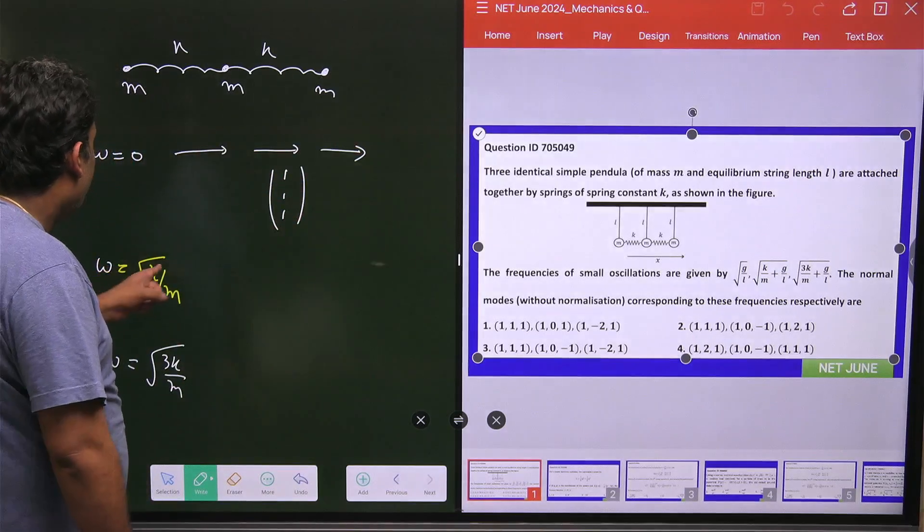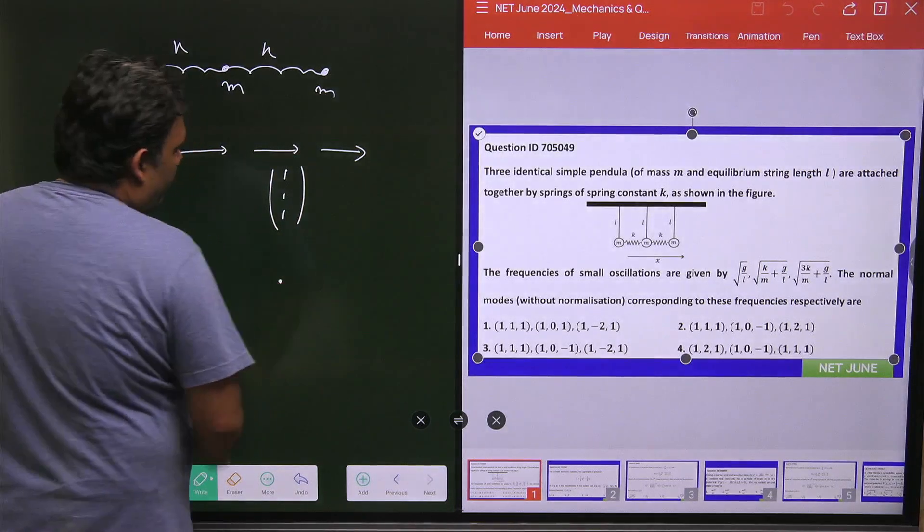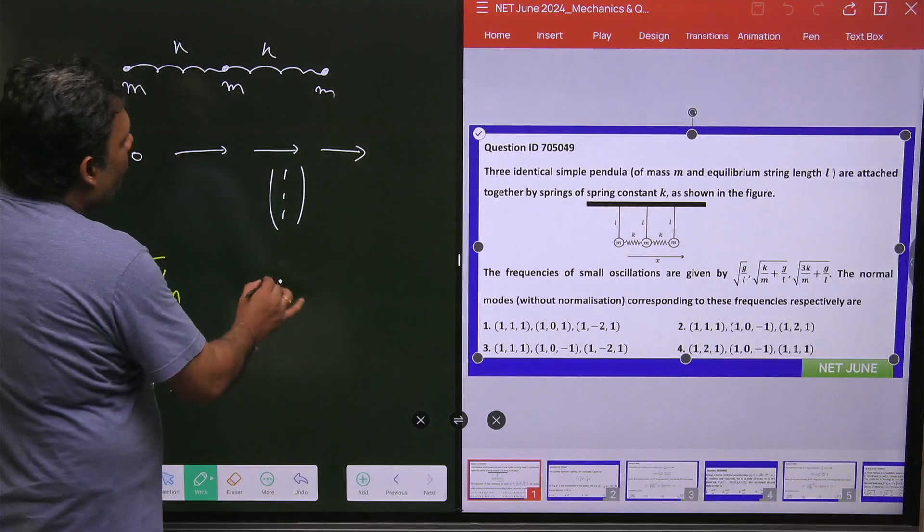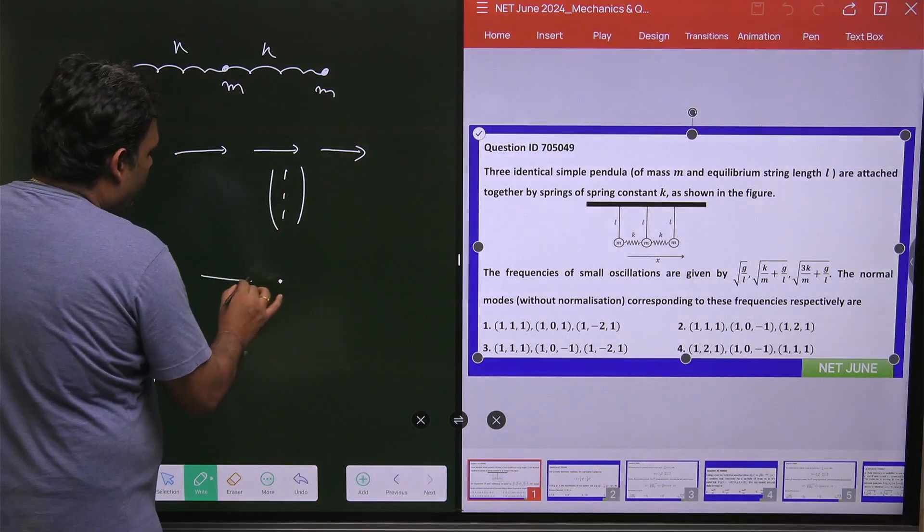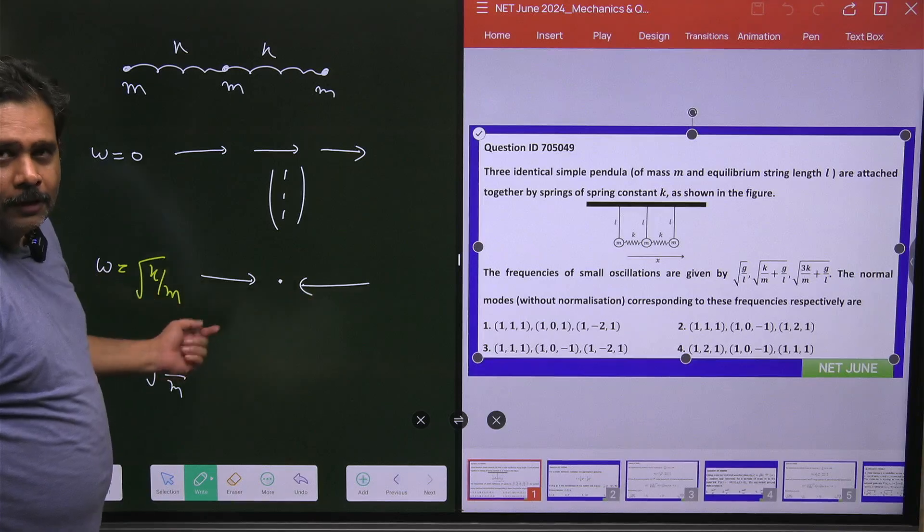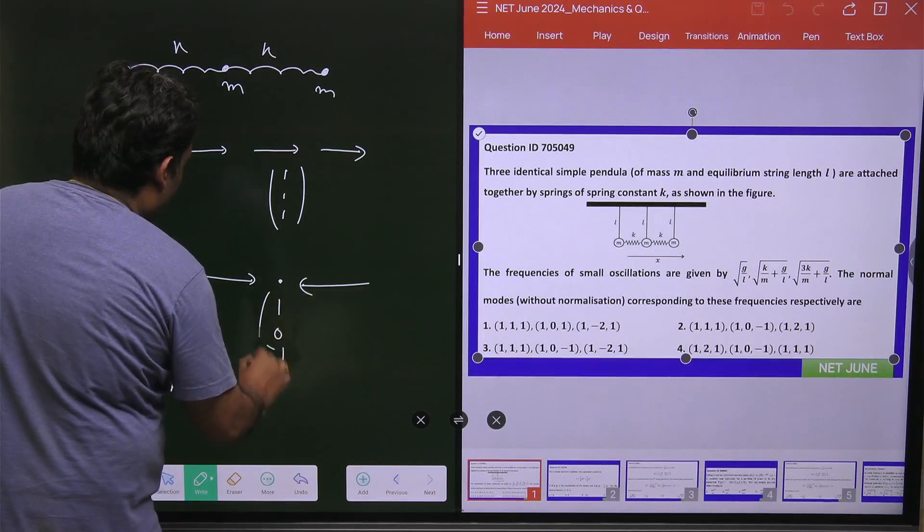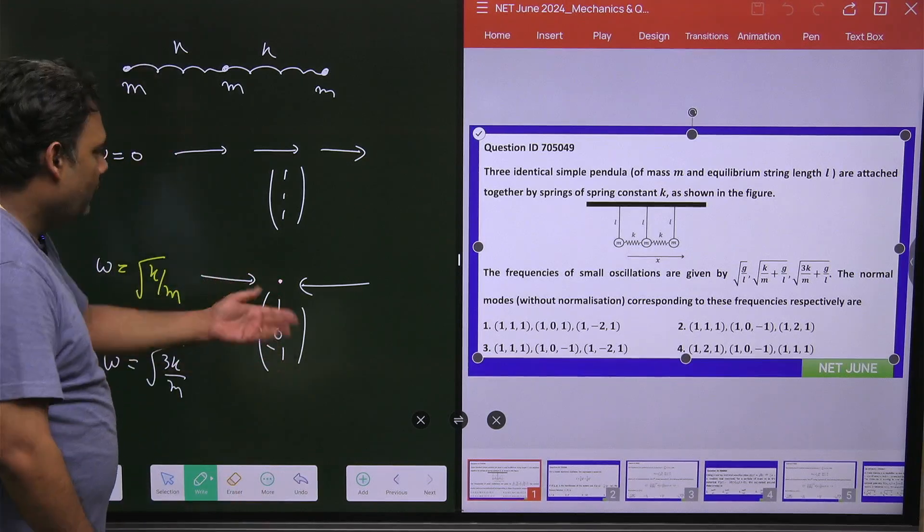And for omega equals root under K upon M, the basic independent motion is the center of mass will remain at rest and two will move in opposite directions with equal magnitude. So what is going to happen? You will go 1, 0, and minus 1. You can write minus 1, 0, 1. That will be the same story.